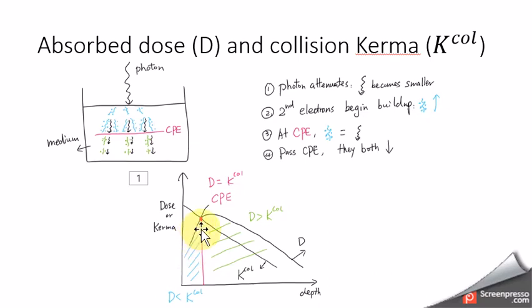At a point, at the CPE point, the absorbed dose equals the collisional kerma. And then the dose will also decrease at the same speed, same slope as the collisional kerma. So past CPE, they both decrease.